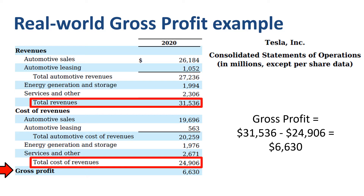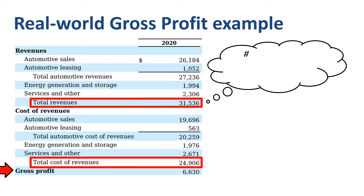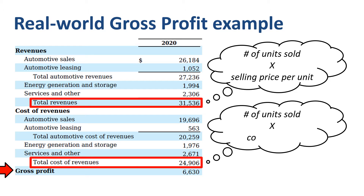Basically, revenue is the number of units sold times the selling price, and cost of revenue is the number of units sold times the cost per unit. Gross profit is the difference between these two — revenue minus cost of revenue.